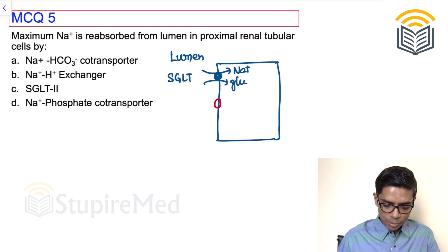Second group of transporter is sodium reabsorbed along with phosphate, citrate, amino acid, etc. So this is also various cotransporter system.